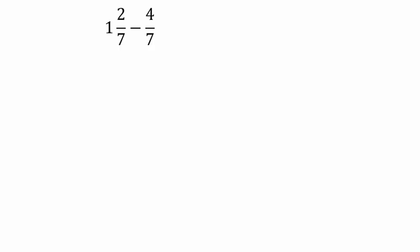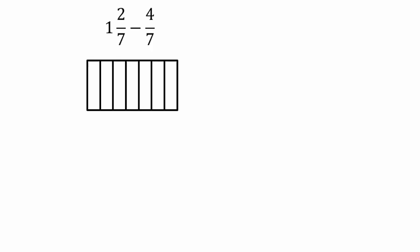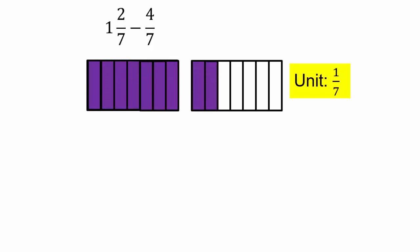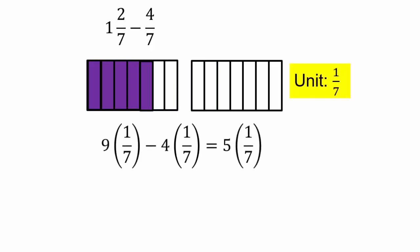Take a look at 1 and 2 sevenths minus 4 sevenths. The unit is again 1 seventh. 1 whole and 2 sevenths means 9 copies of 1 seventh — because 1 is all 7 pieces plus 2 more, giving 9 sevenths. We're subtracting 4 copies of 1 seventh. So 9 copies of 1 seventh minus 4 copies gives you 5 copies of 1 seventh. Our final answer is 5 sevenths.